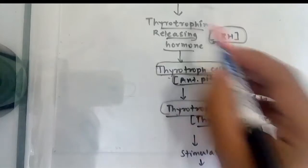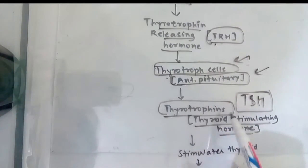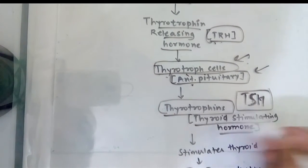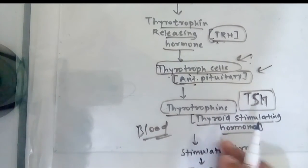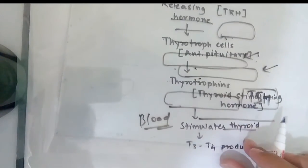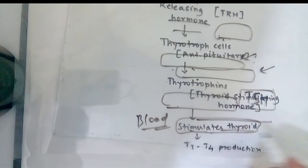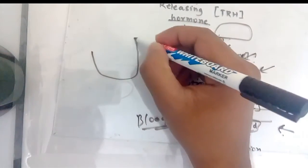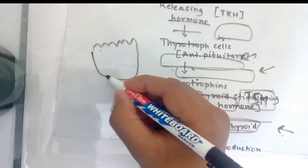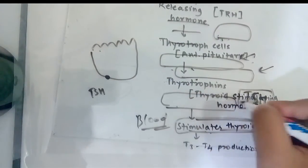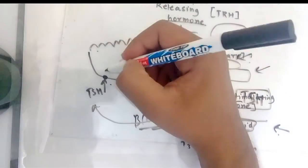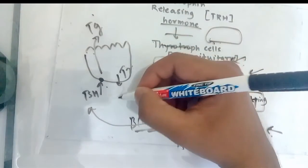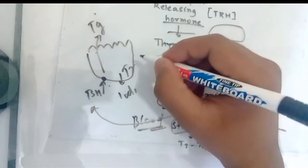TRH is secreted by hypothalamus and TSH is secreted by anterior pituitary. TSH goes into the blood and enters the blood and goes to the thyroid gland and stimulates the thyroid gland. There is a receptor present for TSH on the follicle epithelial cell. TSH binds to this receptor which activates the production of thyroglobulin from colloid and also starts the trapping process and iodide is trapped.